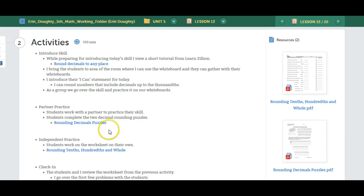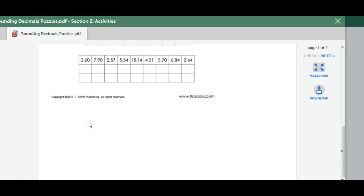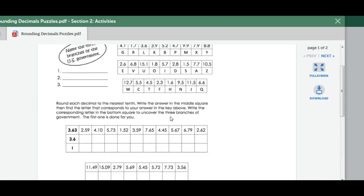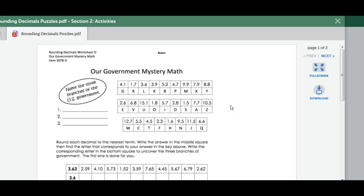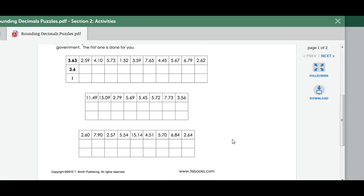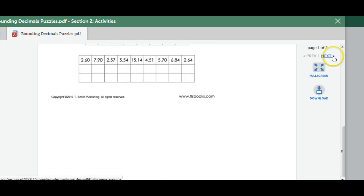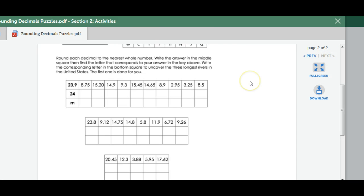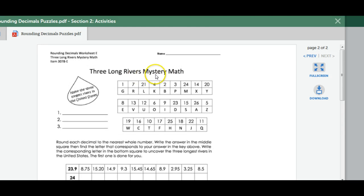The next day, the students will be completing some rounding decimal puzzles with their partner. The students have to round the number, then find the number that was rounded in the top chart, and then write the letter down in the other box to solve the problems. There are two sheets: one's on branches of government and the other one is three long rivers.